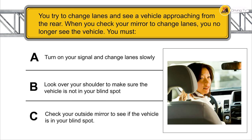You try to change lanes and see a vehicle approaching from the rear. When you check your mirrors to change lanes, you no longer see the vehicle. You must look over your shoulder to make sure the vehicle is not in your blind spot.